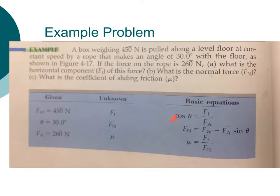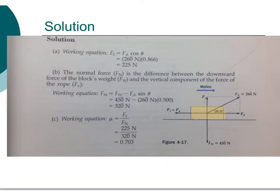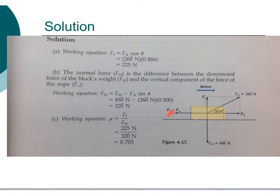We have our basic formulas. In the diagram, the box sits on a flat floor. The box is pulling down at 450 N because that's the weight. We have our vertical force, a force of friction pulling the box in the opposing direction, and the rope pulling with 260 N at an angle of 30 degrees.